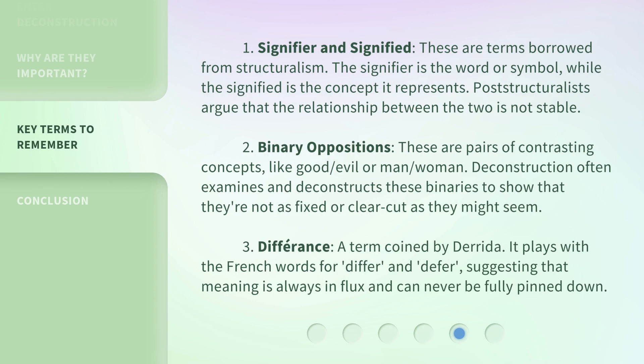Key terms to remember: 1. Signifier and signified — terms borrowed from structuralism. The signifier is the word or symbol, while the signified is the concept it represents. Post-structuralists argue that the relationship between the two is not stable. 2. Binary oppositions — pairs of contrasting concepts, like good and evil, or man and woman. Deconstruction often examines and deconstructs these binaries to show that they're not as fixed or clear-cut as they might seem. 3. Différance — a term coined by Derrida, playing with the French words for 'differ' and 'defer,' suggesting that meaning is always in flux and can never be fully pinned down.